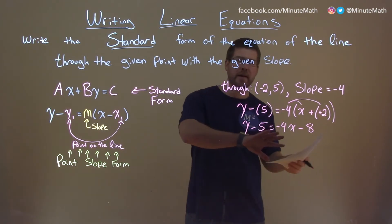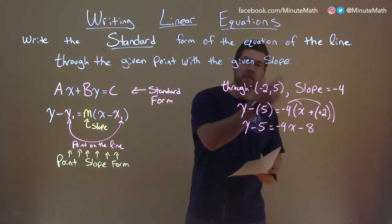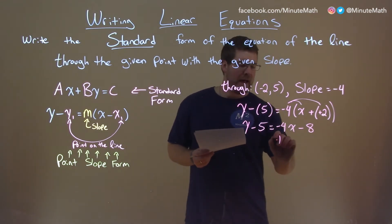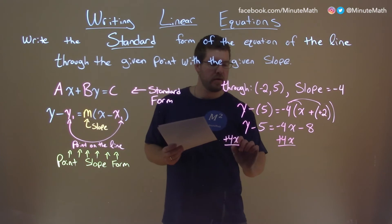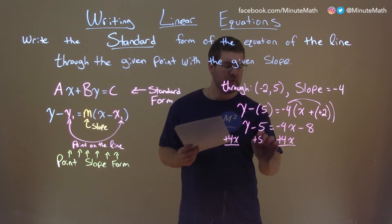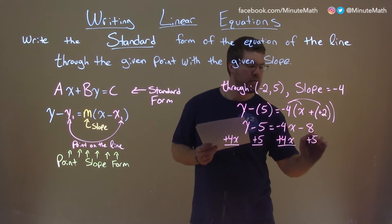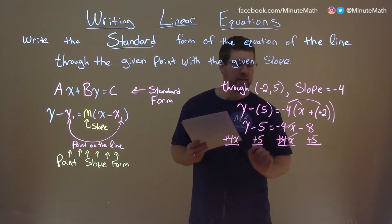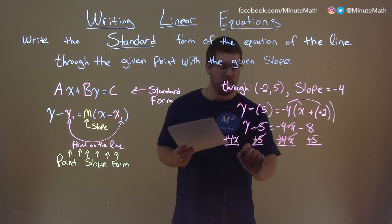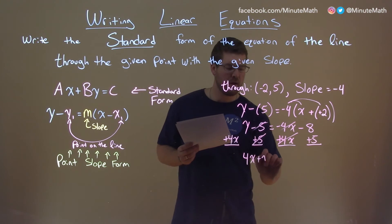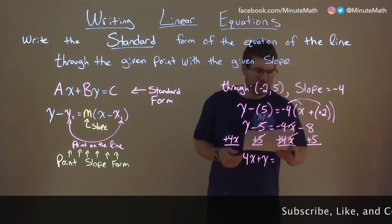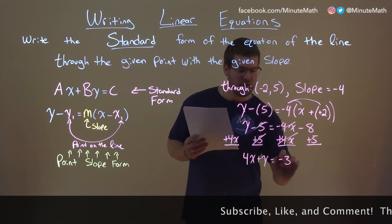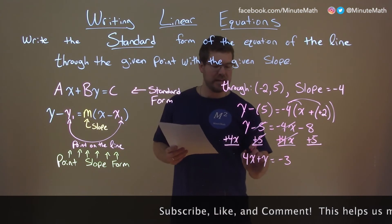So now I want to get all my x and y's to the left, numbers to the right. To do that, I add a 4x to both sides, and then I'm going to add a 5 to both sides. This gets the 4x canceling here, the 5's canceling here, and we have 4x plus y equals negative 8 plus 5, which is negative 3. And we now have this in standard form.